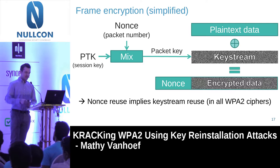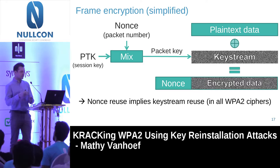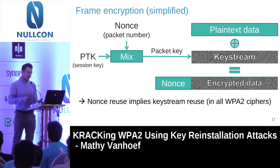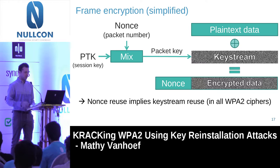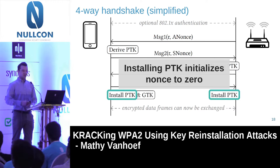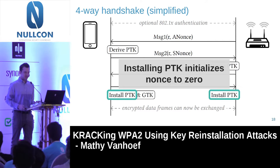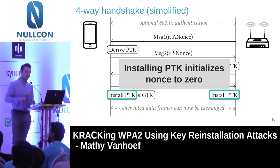This nonce is incremented by one for every packet transmitted. When we install the PTK, the packet number is initialized to zero. That makes perfect sense — you start at zero, always increment by one, so surely it's never reused, right? Unfortunately, we did find a way to force an implementation to reuse its packet number.